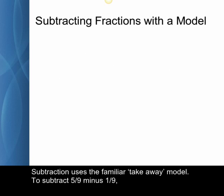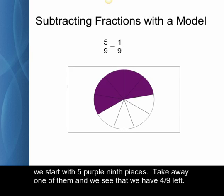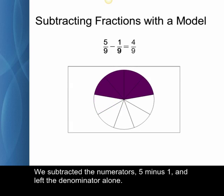Subtraction uses the familiar takeaway model. To subtract five-ninths minus one-ninth, we start with five purple ninth pieces. Take away one of them and we see that we have four-ninths left. We subtracted the numerators, five minus one, and left the denominator alone.